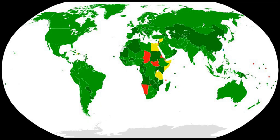Review conferences, other than the fifth, adopted additional understandings or agreements that have interpreted, defined or elaborated the meaning or scope of the BWC provisions, or that have provided instructions, guidelines or recommendations on how a provision should be implemented. These additional understandings are contained in the final declarations of the review conferences. There has been an increase in the percentage of delegates from states' parties who have been women since the first review conference, with just 7% in 1980 to 26% in 2011.